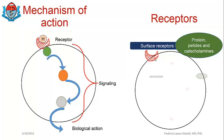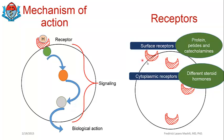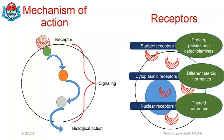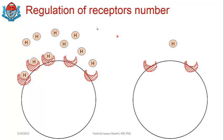We also have cytoplasmic receptors — these are receptors scattered within the cytoplasm, and the class of hormones that activate cytoplasmic receptors are the steroid hormones. The third type we have is nuclear receptors — these are receptors located within the nucleus, and thyroid hormones activate nuclear receptors. So we have our three groups: surface receptors, cytoplasmic receptors, and nuclear receptors — we know the examples of hormones that activate each and why.